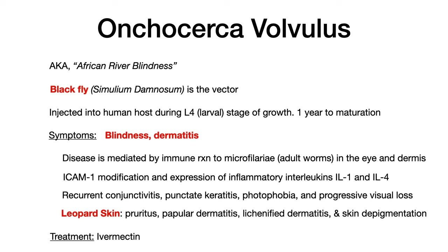Onchocerca volvulus gets injected into the human host during the L4 larval stage of growth. Before that, the pathogen grows within the black fly through stages L1 through L3. After injection, it takes approximately one year to fully mature into an adult worm, also known as a microfilariae. Once it matures in the human host, it starts to manifest symptoms.